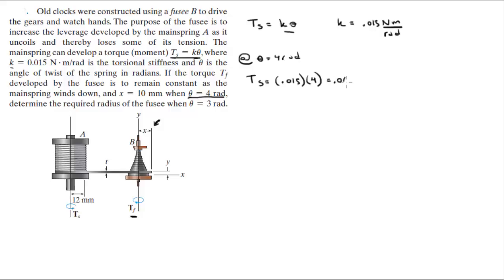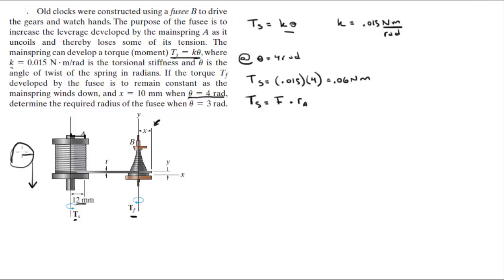You also know that Ts equals force times the radius of A — that radius right here. The moment is given by the force that is pulling times the radius of the spring. Looking at a top view, the moment equals radius times force. So using this formula, we solve for F.